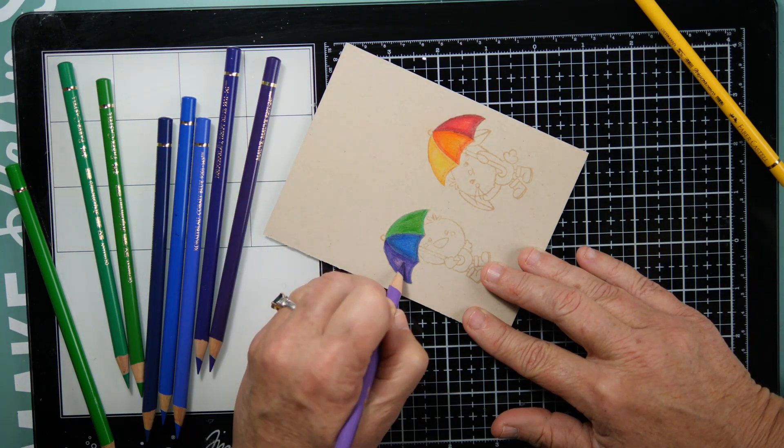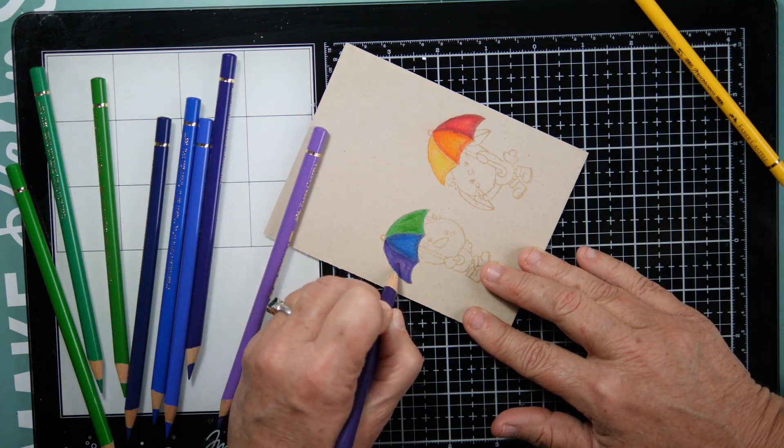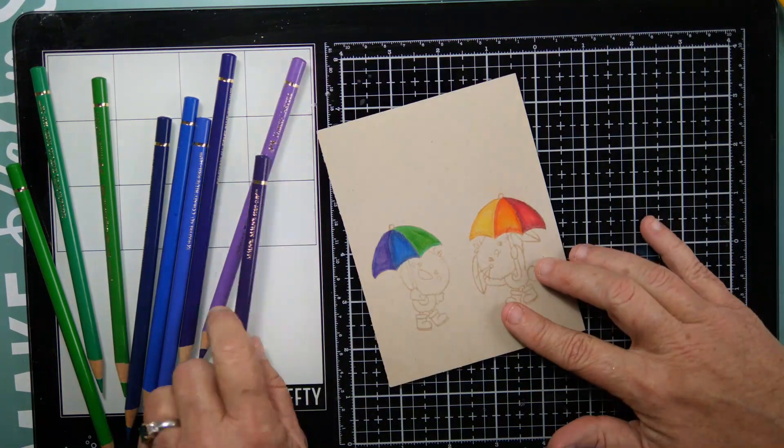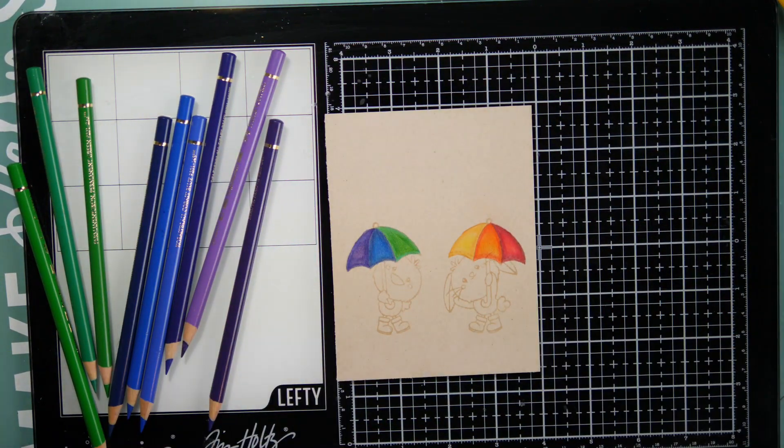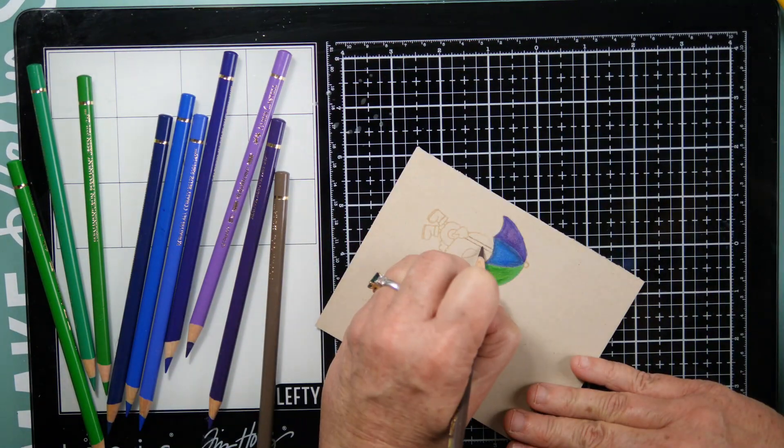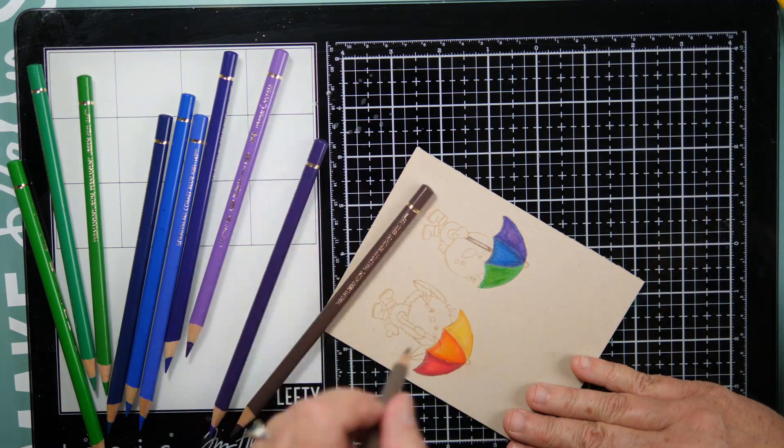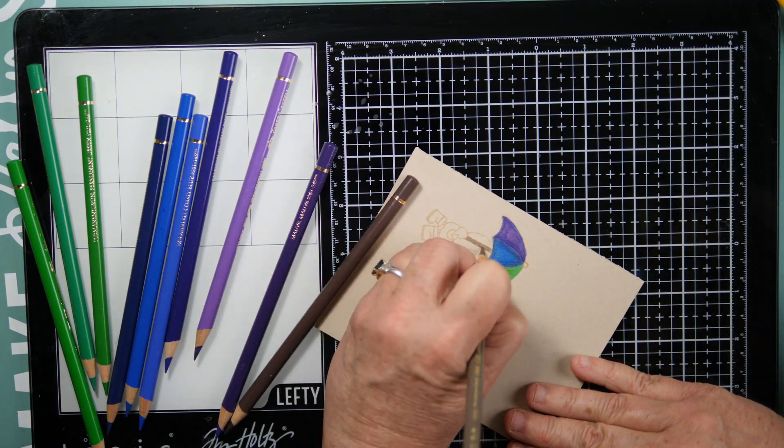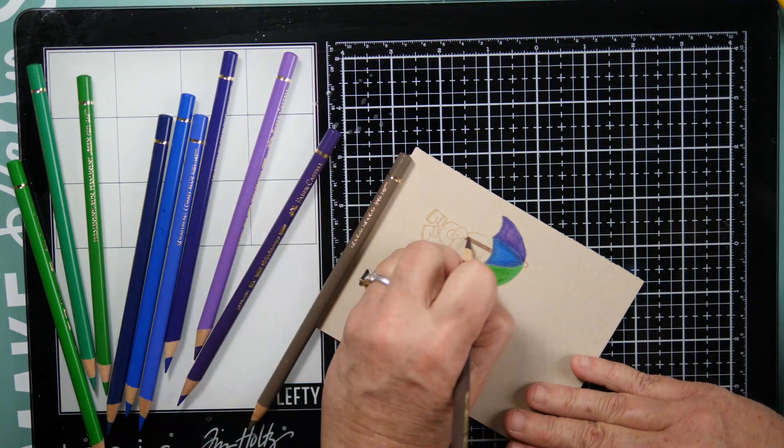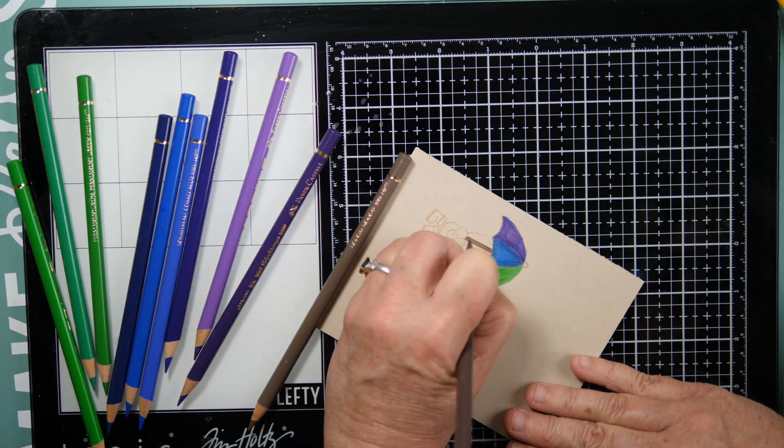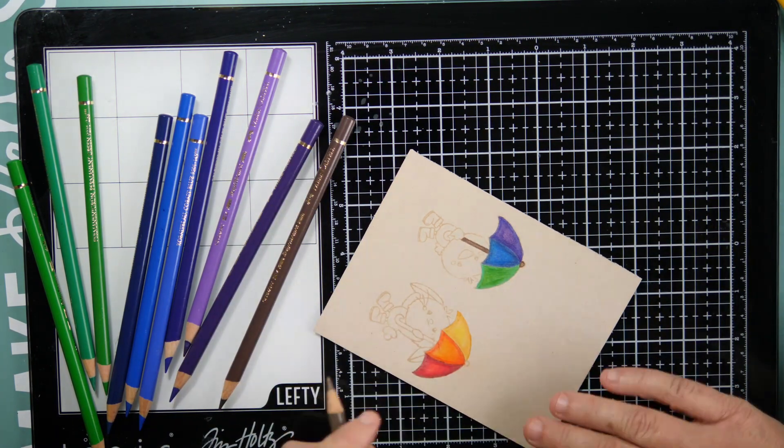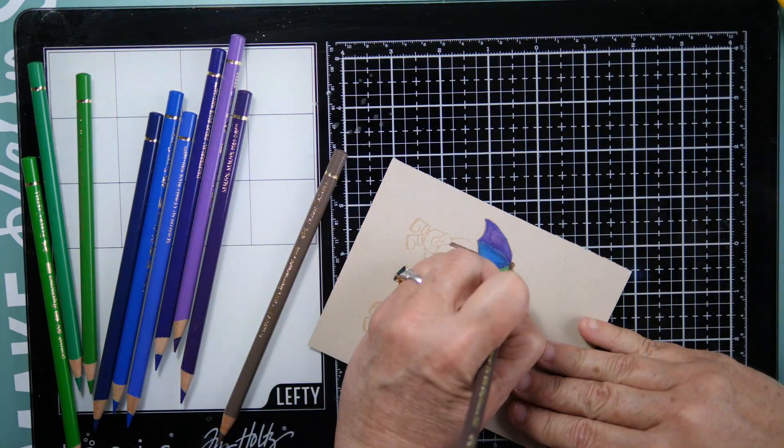Back to the card. I am going to layer up the rainbow colors on these umbrellas and then I'm only going to color one of these for you, the little handles, because they're both colored exactly the same.